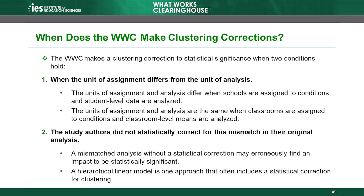The WWC applies a clustering correction to adjust for the correlation of outcomes within clusters when two conditions hold. First, the unit of assignment — for example, school-level assignment — is not the same as the unit of analysis — for example, student-level analysis. It is not necessary to perform an adjustment when the authors analyze cluster-level data. Second, the authors did not statistically correct for the mismatch between the unit of assignment and unit of analysis in the study analysis. For example, a hierarchical linear model would include a statistical correction for clustering. The WWC performs this clustering correction for both cluster RCTs and cluster QEDs.